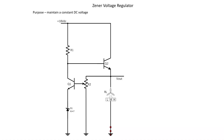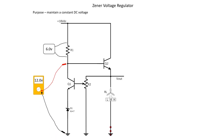The first thing we're going to talk about is the Zener voltage regulator. Just like the regulator section of a power supply, the purpose is to maintain a constant DC output voltage. In this circuit we have 18 volts applied. We're going to say R1 is dropping 6 volts, which means that Q1 and D1 have to be dropping 12, which places 12 volts on the base of Q2.